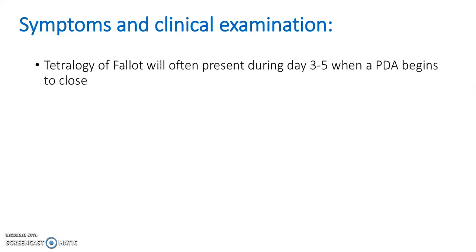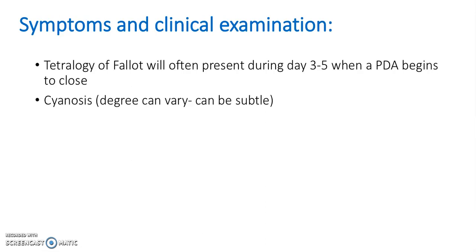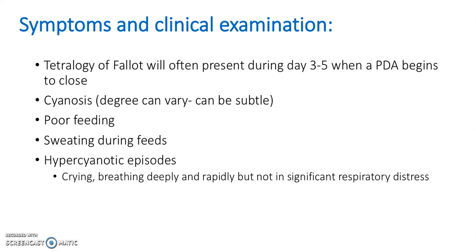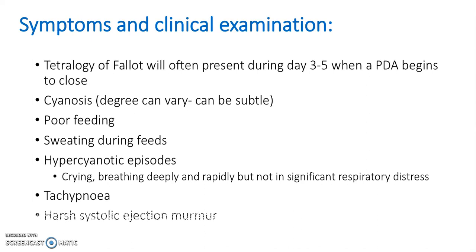Symptoms and clinical examination. Tetralogy of Fallot will often present during a three to five day period when a PDA begins to close. The patient will become cyanosed and the degree can vary — however, it can be quite subtle, so look out for it. They can be poor when feeding, they can sweat during feeds, they can become hypercyanotic where they're crying, breathing deeply and rapidly, but not in significant respiratory distress. They can also be tachypnoeic, and they can have a harsh systolic ejection murmur.